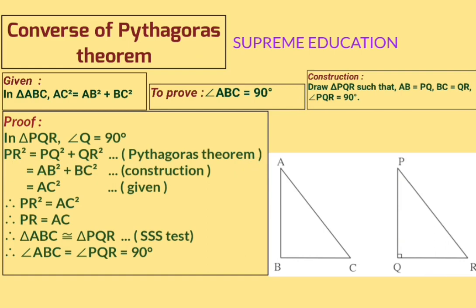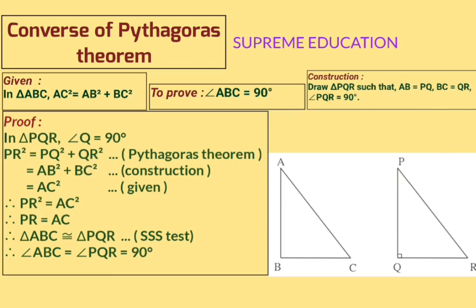Since PQ = AB and QR = BC by construction, we replace PQ² with AB² and QR² with BC². Therefore PR² = AB² + BC². The reason is construction.